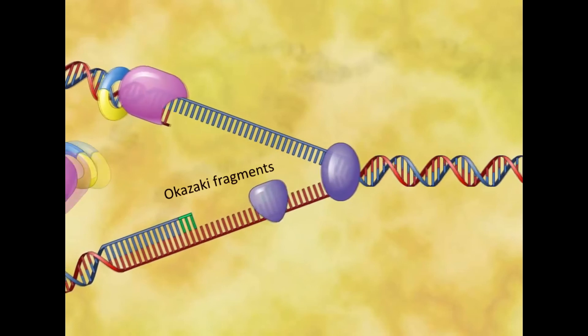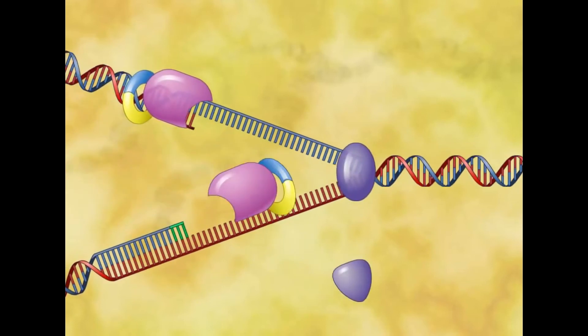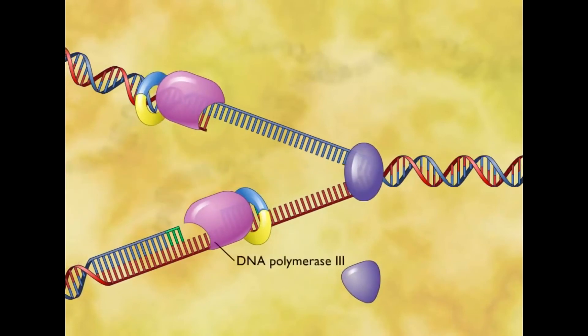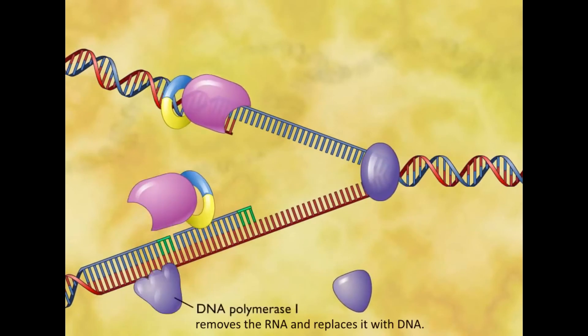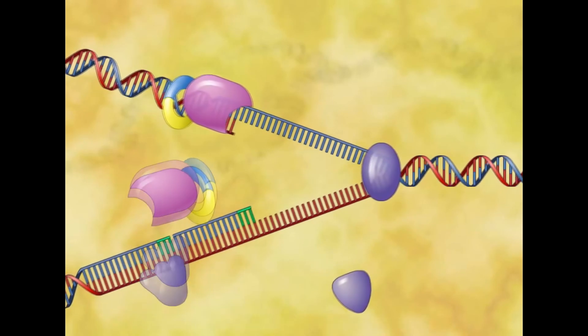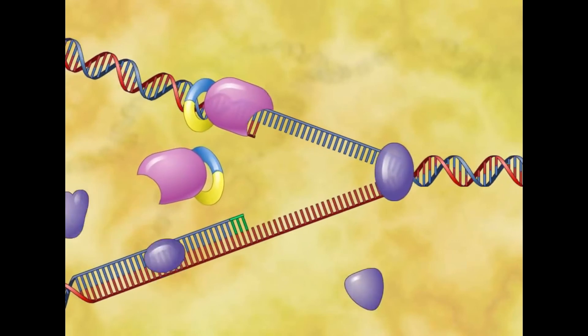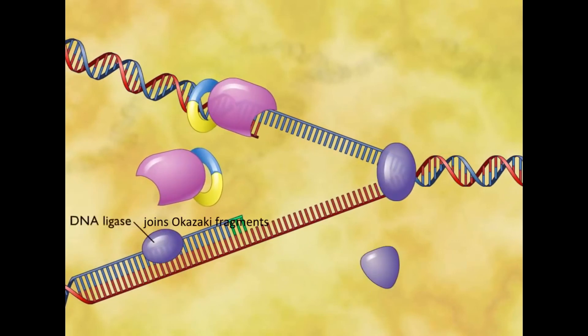The lagging strand is replicated in the form of short Okazaki fragments. When DNA polymerase 3 reaches the RNA primer, it is replaced by DNA polymerase 1 which removes the RNA and replaces it with DNA.